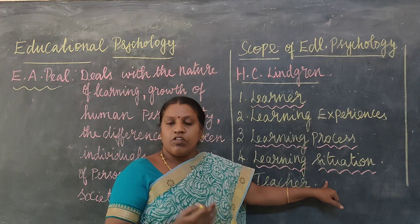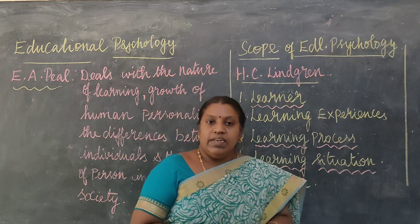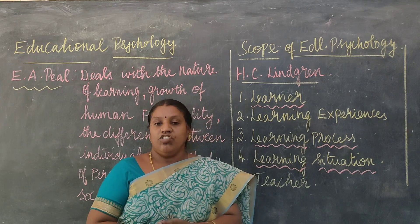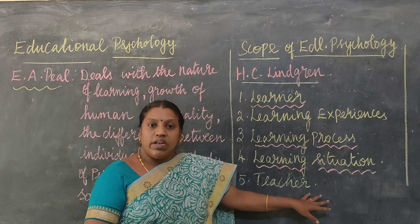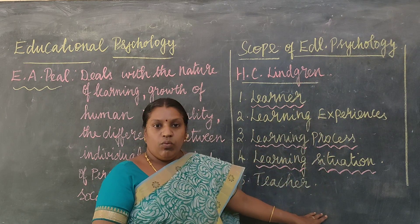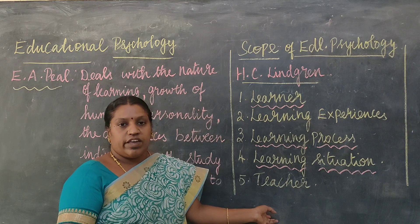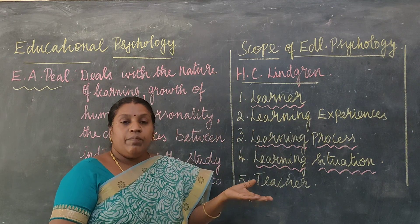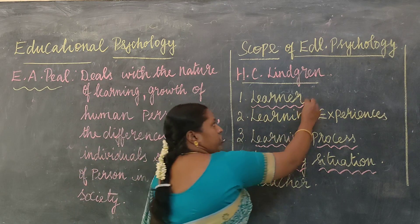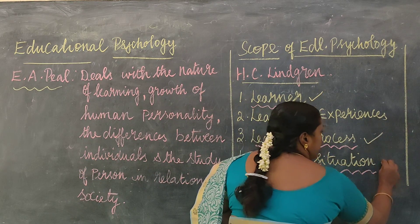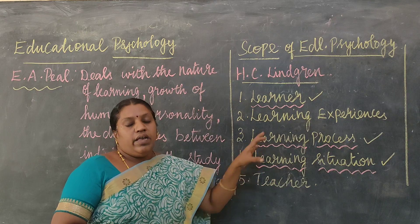Finally, the teacher. The teacher's personality, their interest, the methods they use, the way they teach the content — everything is very important. A teacher should have certain ability to teach concepts in a better way. H.C. Linder has given these five areas which determine the scope of educational psychology. Among these points, three have been highlighted as the most important components: the learner, the learning process, and the learning situation, because they are the key components that determine the educational psychological process.